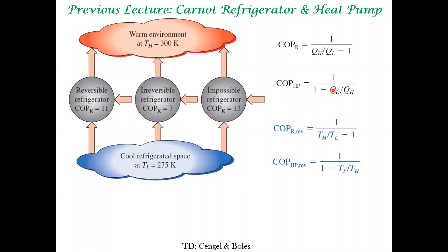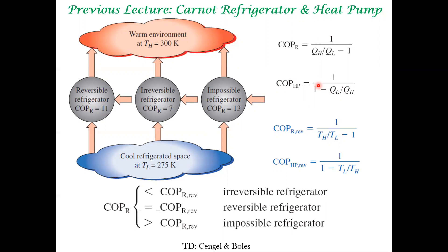These formulas are in general applicable, whether it's a reversible or irreversible system. But for a reversible refrigerator or reversible heat pump, we can have a formula based on the temperatures of the two reservoirs we are considering, though the general formula is applicable for any refrigerator and heat pump. We also demonstrated, based on the coefficient of performance, what constitutes a reversible refrigerator and heat pump, an irreversible refrigerator and heat pump, and an impossible refrigerator and heat pump. All these are different facets of the second law.